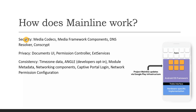Google breaks these 12 components into three categories: security, privacy, and consistency. Under security, we can see media codecs, media framework components, DNS resolver, and Conscrypt — all related to media and security. If any change is made in the media framework, the whole system update is not needed; we can just update only the media framework through the Google Play Store. Under privacy and consistency, there are additional components as well.